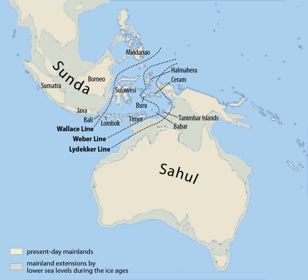As a result, the modern islands of Sundaland are home to many Asian mammals including elephants, monkeys, apes, tigers, tapirs, and rhinoceros. The flooding of Sundaland separated species that had once shared the same environment.